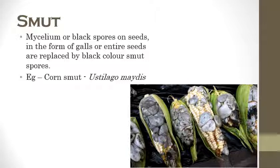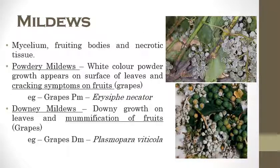The second one is smut. The infected parts, especially seeds, are converted into black color powdery masses. If we touch the infected portions, the powdery spores can be observed. The example is corn smut which is caused by Ustilago maydis.